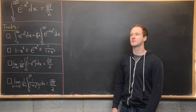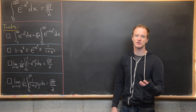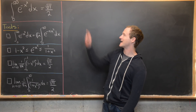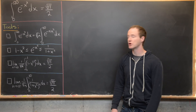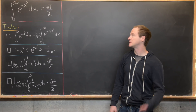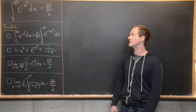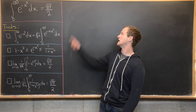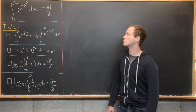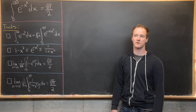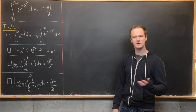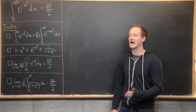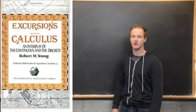Here we're going to look at a pretty nice approach to the Gaussian integral — showing that the integral from 0 to infinity of e to the minus x squared is equal to root pi over 2. This approach comes from a book called Explorations in Calculus.